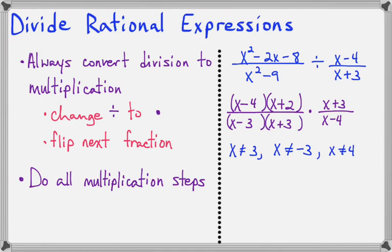Okay, now we can cancel, I cancel out my x minus 4's, I cancel out my x plus 3's, and all that's left is x plus 2 over x minus 3, and of course we need to leave these numbers out of the domain.